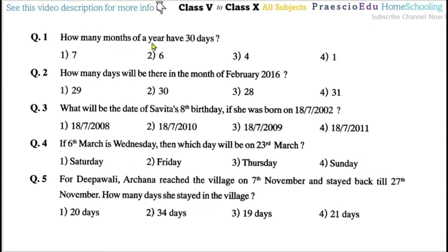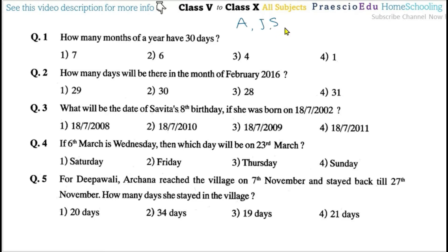How many months of a year have 30 days? The months with 30 days are: April, June, September, and November. So one, two, three, and four — there are four months. Option number three is correct.